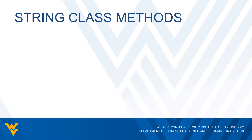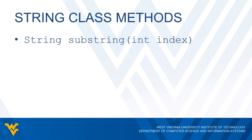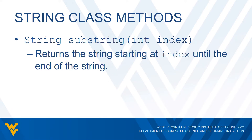The next method we'll take a look at is the substring method. This is a pretty simple, straightforward method. What we do is we pass some integer which is going to be our index, and we simply get the string that starts at that index position, going all the way to the end of the string and returning that string itself.